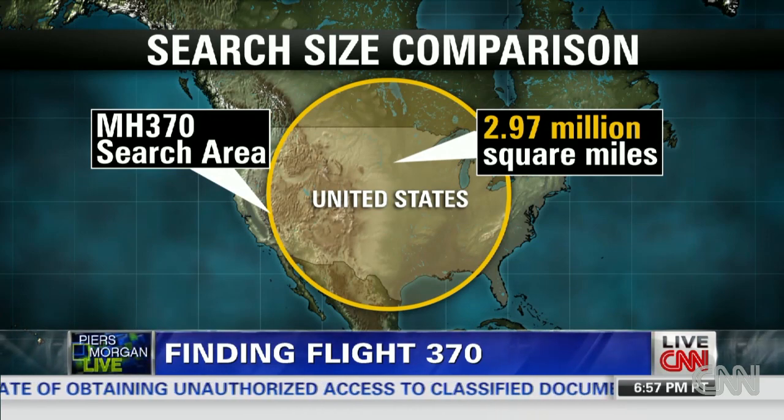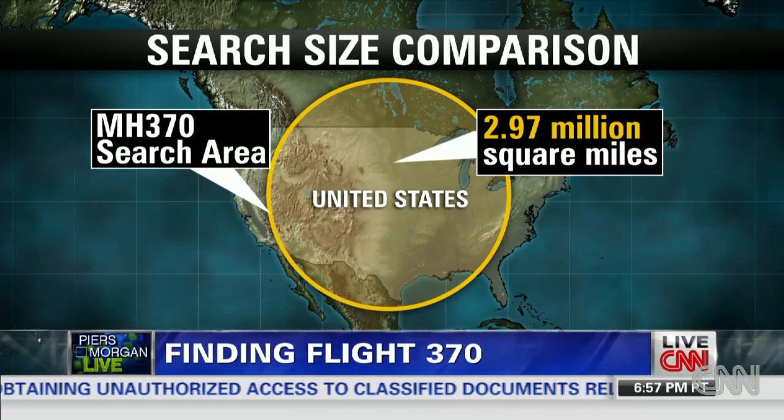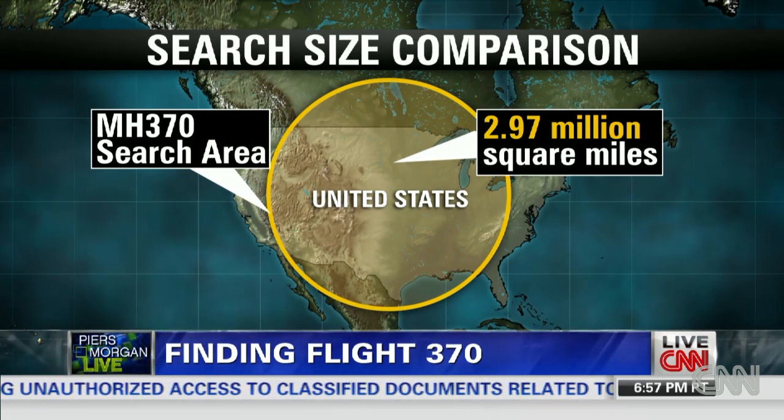Maybe statisticians — guys who crunch numbers, do probability theories — can help us out. Carl Bialik is a writer for the newly expanded 538.com, which launched yesterday. Nate Silver's guys, the ones who sort of predict elections with incredible accuracy. Congrats on the launch.